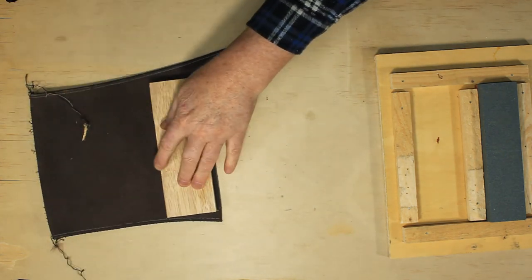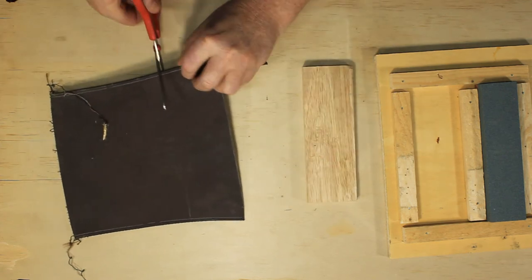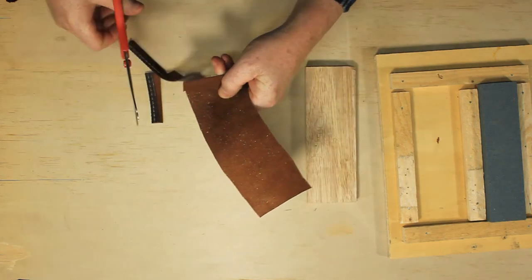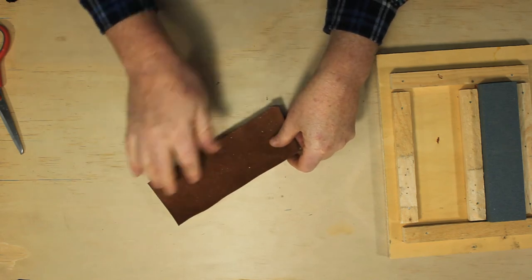Let's mark a line around that a little bit bigger than what we need and cut it out with some scissors. It's easier to cut this bigger and glue it on, and then trim the edge.